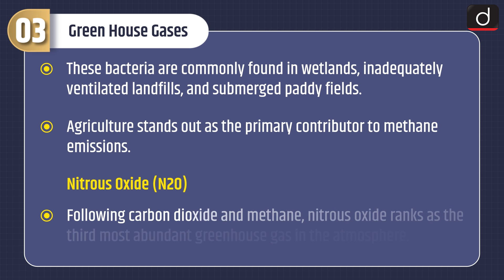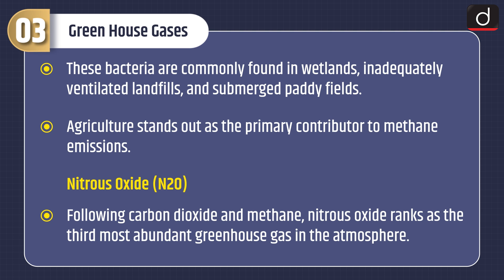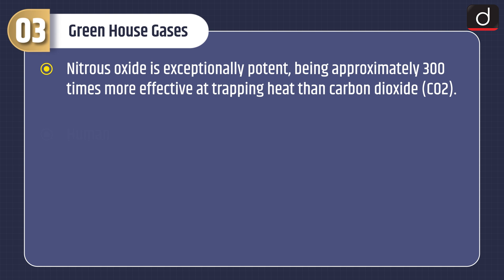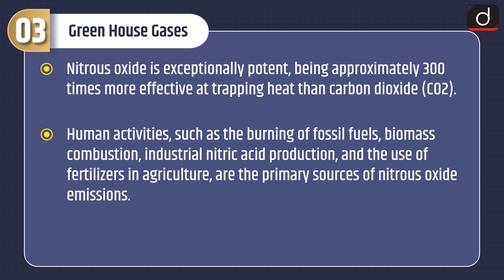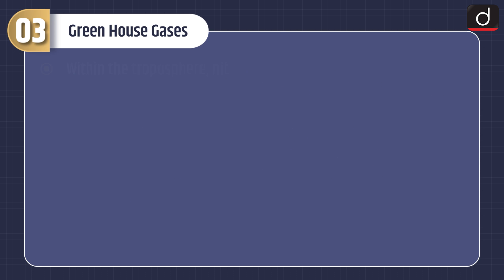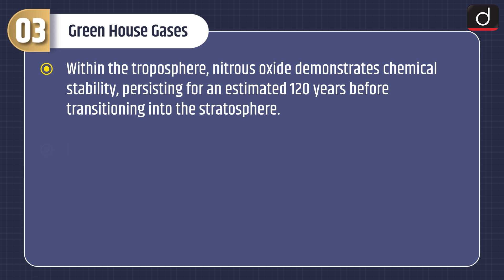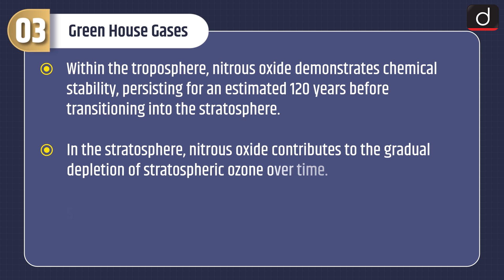Third, nitrous oxide: following carbon dioxide and methane, nitrous oxide ranks as the third most abundant greenhouse gas in the atmosphere. It is exceptionally potent, being approximately 300 times more effective at trapping heat than carbon dioxide. Human activities such as burning of fossil fuels, biomass combustion, industrial nitric acid production, and the use of fertilizers in agriculture are the primary sources. Within the troposphere, nitrous oxide demonstrates chemical stability, persisting for an estimated 120 years before transitioning into the stratosphere, where it contributes to the gradual depletion of stratospheric ozone.